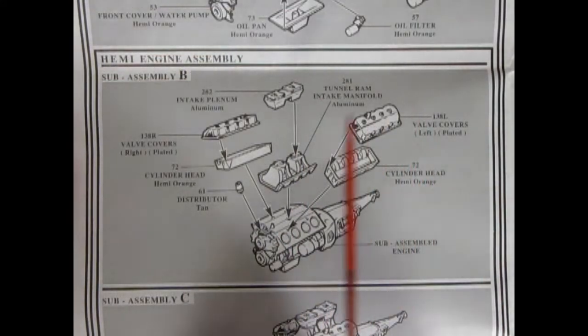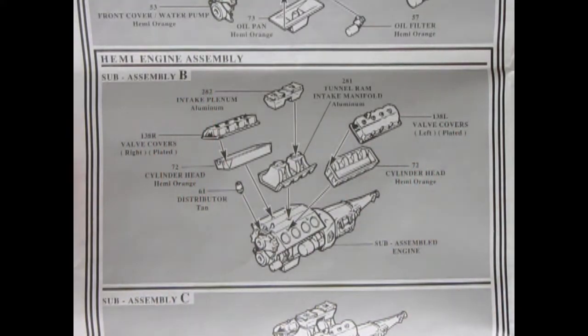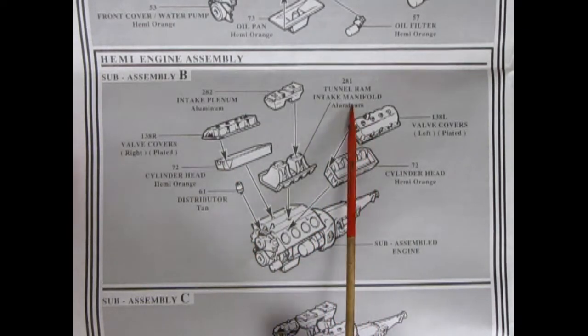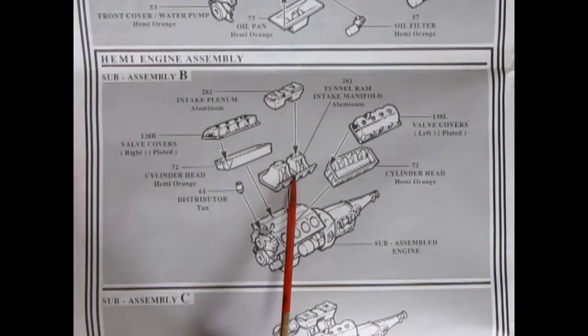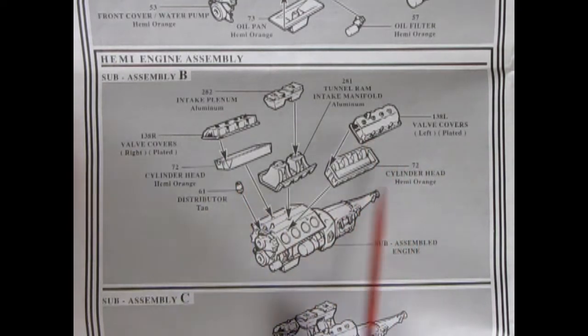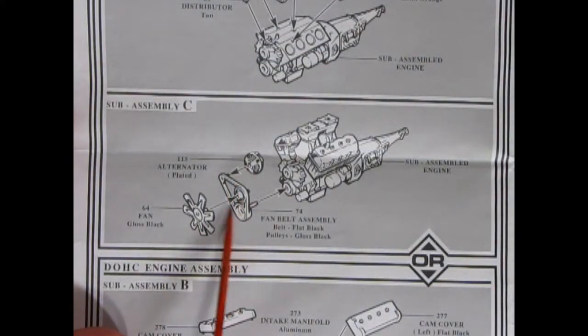Next up is our first choice of Hemi engine. And this is the standard Hemi 426. We've got our cylinder heads plopping down on our engine block. The tunnel ram intake manifold with our dual plenum right here going on top. Cylinder heads chrome valve covers. And then our distributor will all connect onto this big engine block. Subassembly C is showing our fan belt and pulleys. The alternator and the fan all being hooked up together and then being put in here. Can you get behind it?